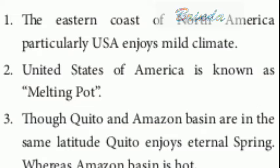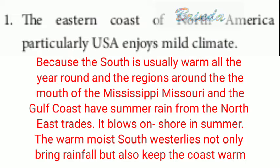Give reasons. First: the eastern coast of North America, particularly USA, enjoys mild climate. Because the south is usually warm all year round, and the region around the mouth of the Mississippi and Missouri and the Gulf Coast receives summer rain from the northeast trades that blow onshore in summer. The warm moist westerlies not only bring rainfall but also keep the coast warm.